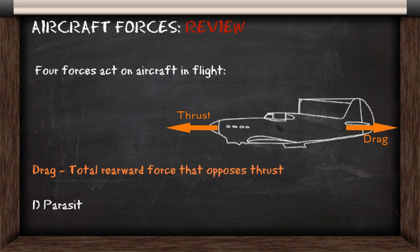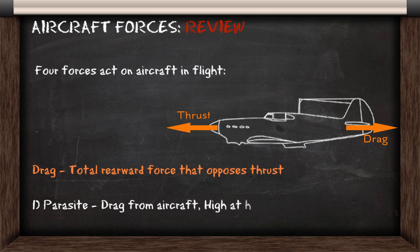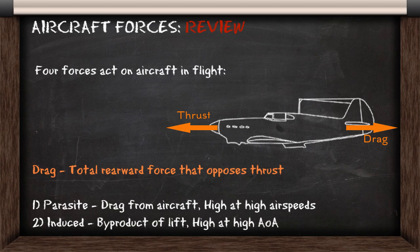And there's two types. There's parasite drag, which is the drag from the aircraft, which is high at high airspeeds, and then you have induced drag, which is the byproduct of lift, and that's high at high angles of attack.